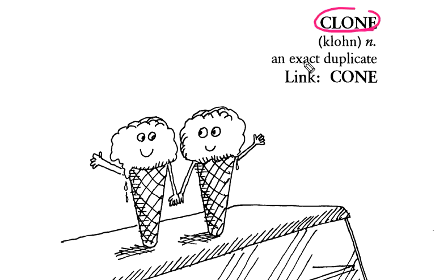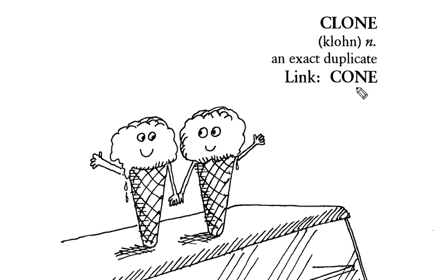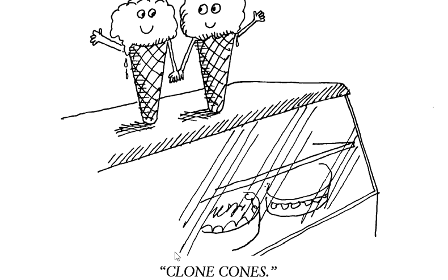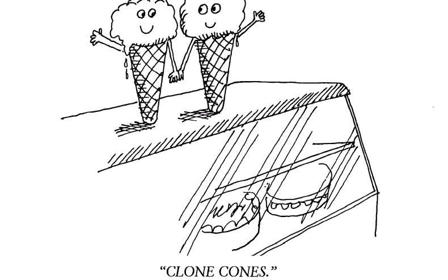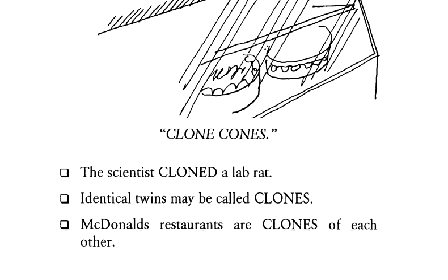Clone — we call an exact duplicate a clone. It has been linked to the word clone, so clone means clones, and clones are exact duplicates. Clone means exact duplicate. For example, a scientist cloned a lab rat — meaning they made a duplicate of the lab rat.